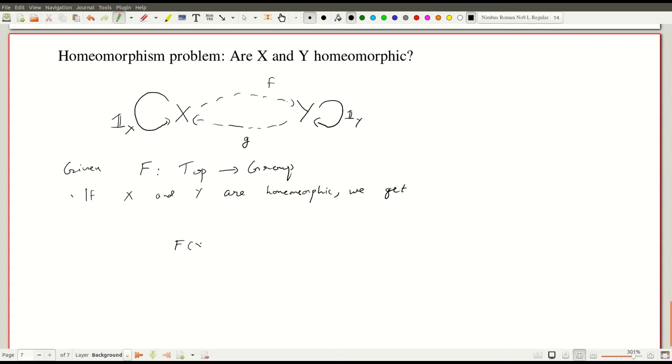I have F of X here which is a group, I have F of Y here which is a group. I have the identity map on F of Y - that is the image of the functor. And I have the identity map on F of X. And then I have to solve these two.